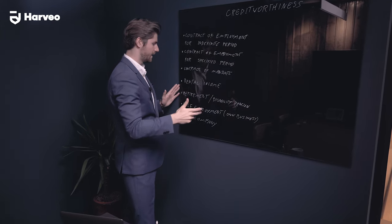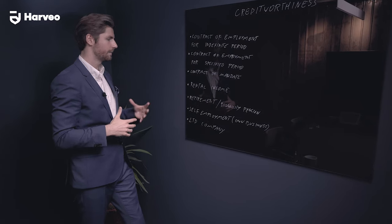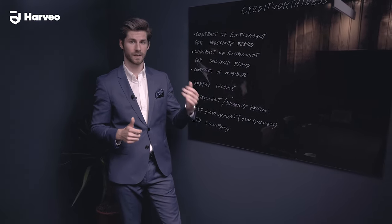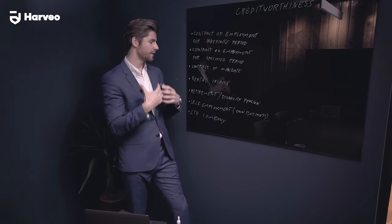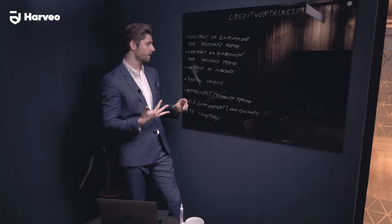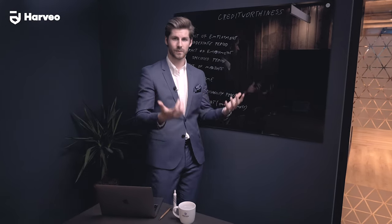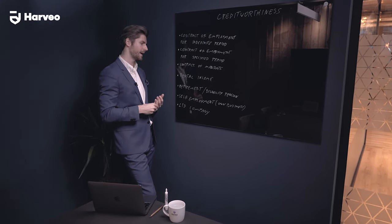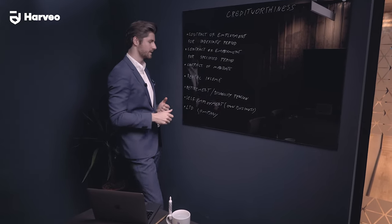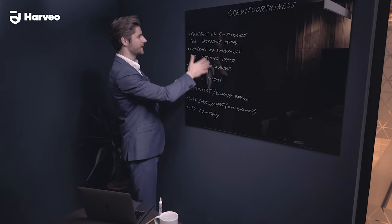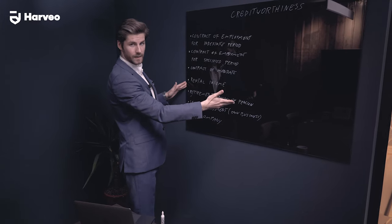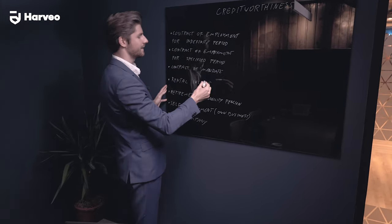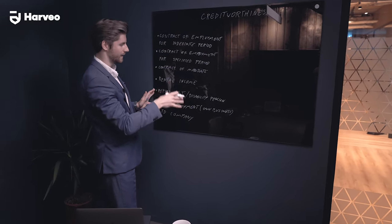Rental income is a very broad topic, but as an investor in Poland you may have real estate generating profit from renting. We need to prove it via the PIT annual tax statement showing official income, plus a copy of your rental contract with the tenants. We generally need to look 12 months back, though some banks accept six months backwards.